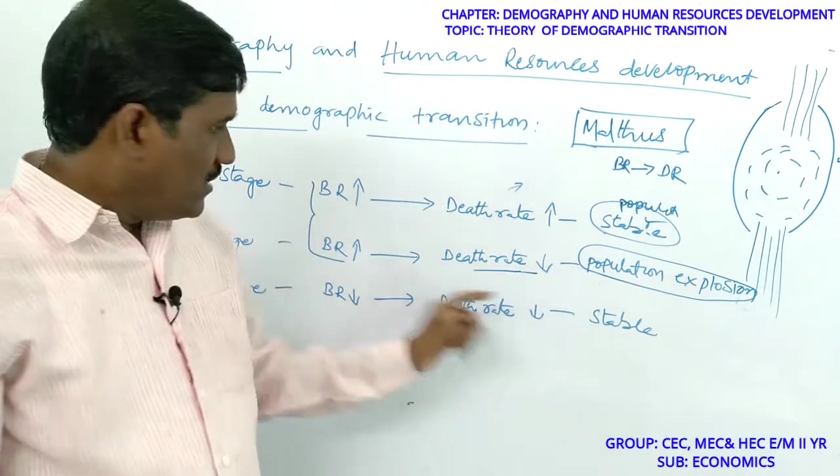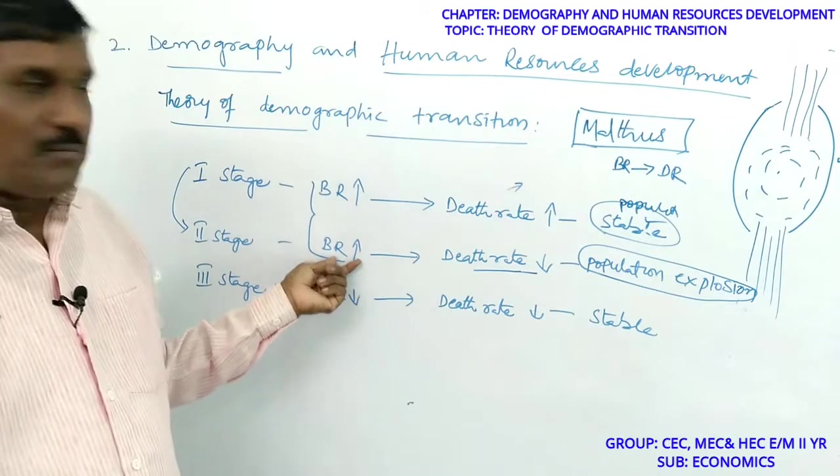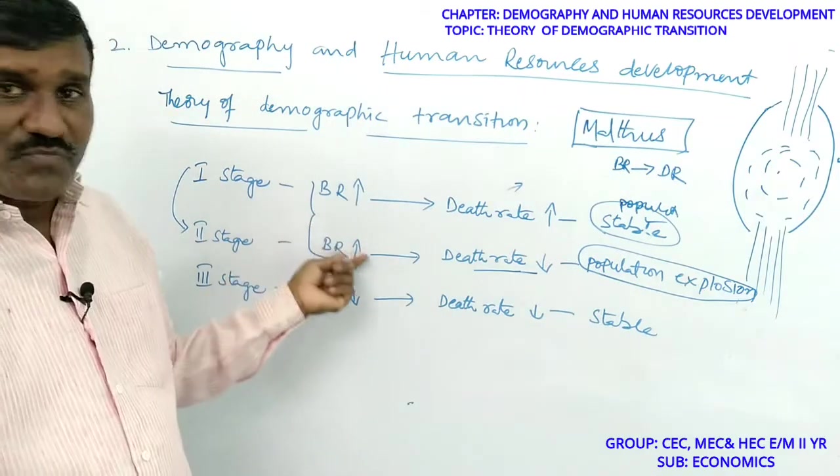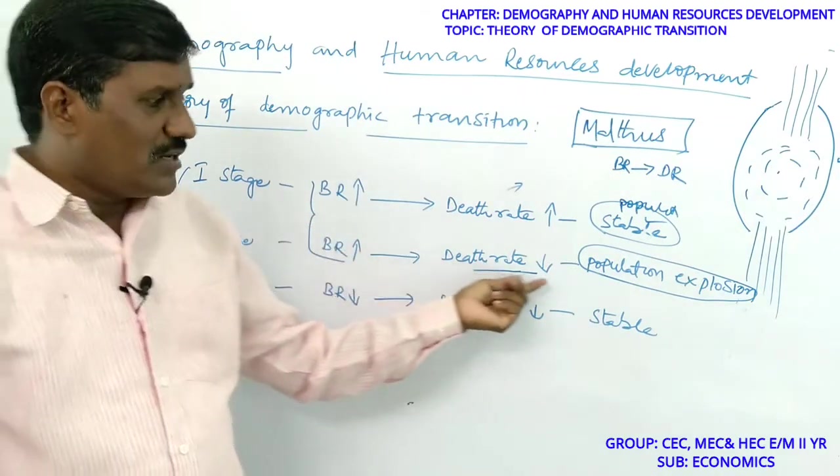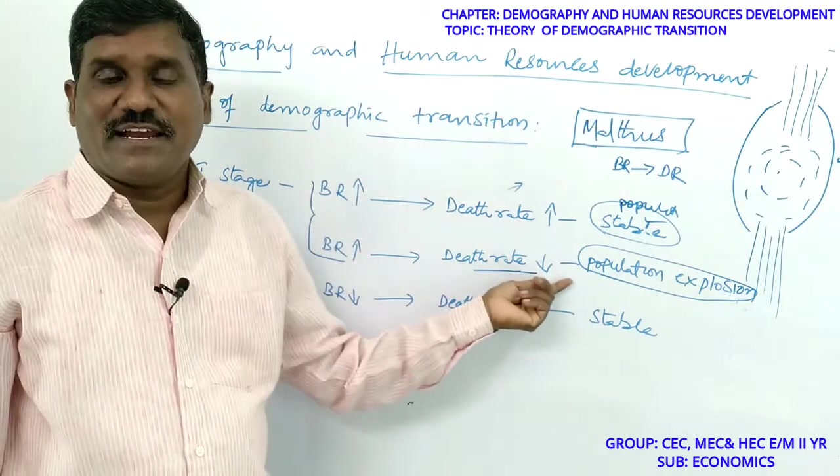This is the second stage. Birth rate remains the same as in the previous stage, but death rate declines, which is what happens in the second stage.